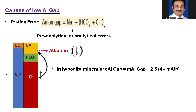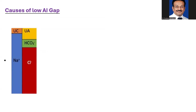In hypoalbuminemia you need to calculate the corrected anion gap — this is something I ask in exams and trainees often ignore it. The corrected anion gap formula is: measured anion gap + 2.5 × (4 minus measured albumin). Simply remember: 2.5 times (4 minus measured albumin) added to the measured anion gap.